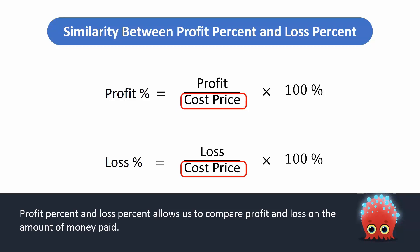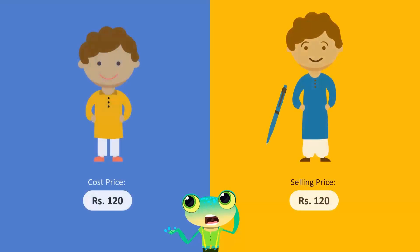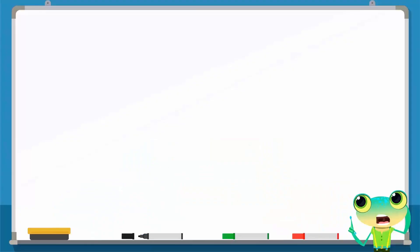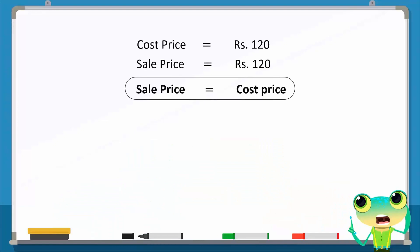If Ali sold the pen at the same price as the cost price, what would be the profit or loss percent? Since we know that the selling price and the cost price are the same, then by subtracting the cost price from the sale price, we get 0. This shows that there is neither a profit nor a loss.